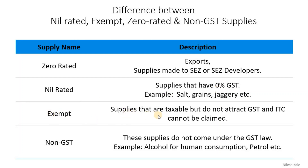Exempt supplies are supplies that are taxable but do not attract GST, and ITC cannot be claimed because such goods are exempted. Why do you not pay GST on exempted supplies? It is because the GST Act says so or the notification given by the government says so. Exemptions are given for a time limit and if the time limit exceeds then automatically exempted supplies become taxable supply, or as notified by the government.